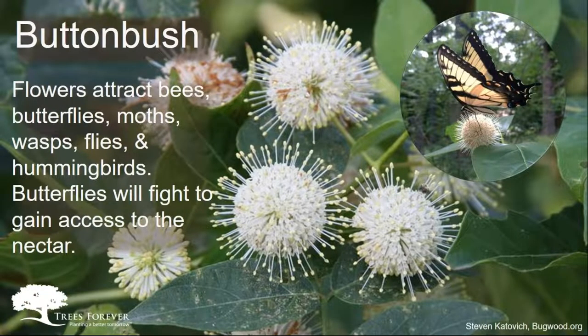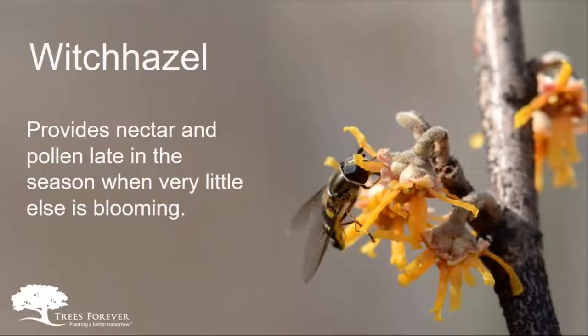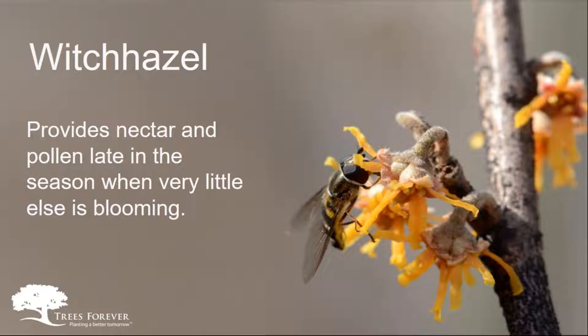Now we get to buttonbush. The thing to think about with buttonbush is obviously the unique little puff balls, and it does well in wet areas in the garden. It's a host plant to the Prometheum moth, the Hydrangea Sphinx, and the Saddleback Caterpillar — specific insects that it's a host plant for. Witch hazel is going to provide some nectar and pollen late in the season when little else is blooming. These trees can get up to 20 feet tall — it is the last woody plant to bloom in the fall — and it attracts primarily wasps and flies.